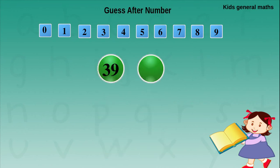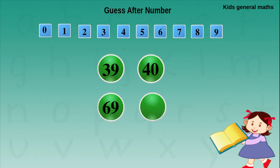Suppose a number ends with 9 — we are going to find the after numbers for this. They are given 39. For 9 we are going to write it as 0. For 3 we are going to find the after number — after 3 is 4. So after 39 is 40. Next they are given 69. For 9 we write it as 0. For 6 we find the after number — after 6 is 7. So after 69 is 70.